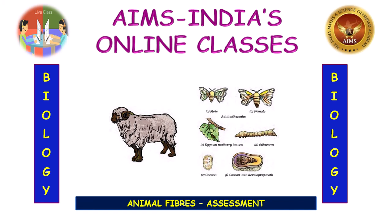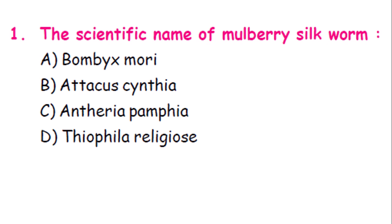Okay children, this is the brief review. So let us proceed to the exercise. The first question: the scientific name of the mulberry silkworm is Bombyx mori, Attacus cynthia, Antheraea, Pampia, or Theophila religiosae? It is Bombyx mori.